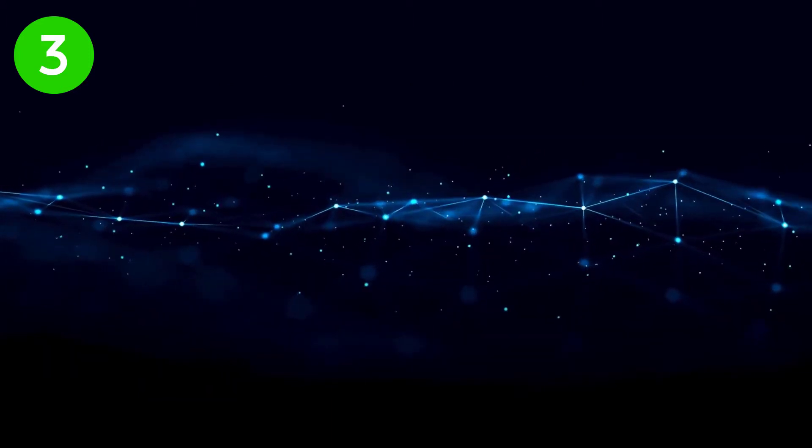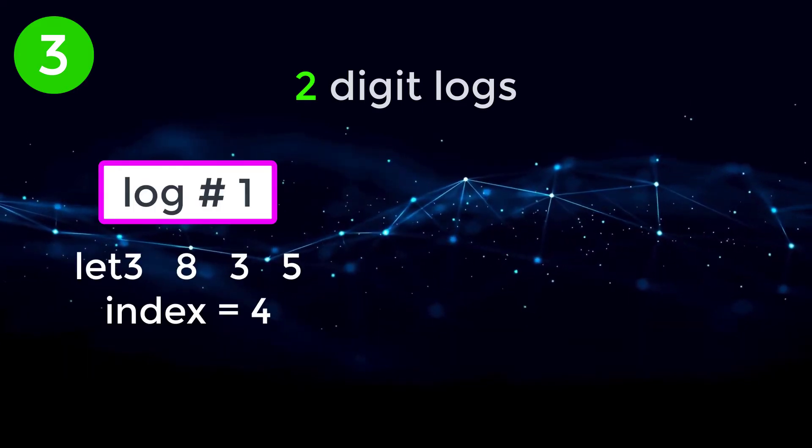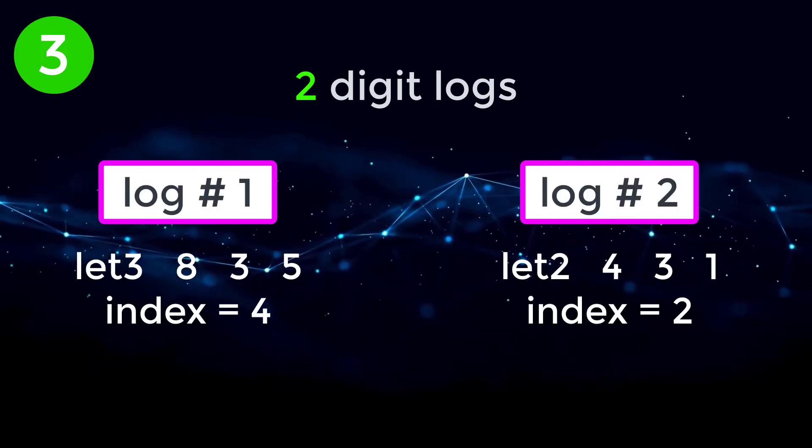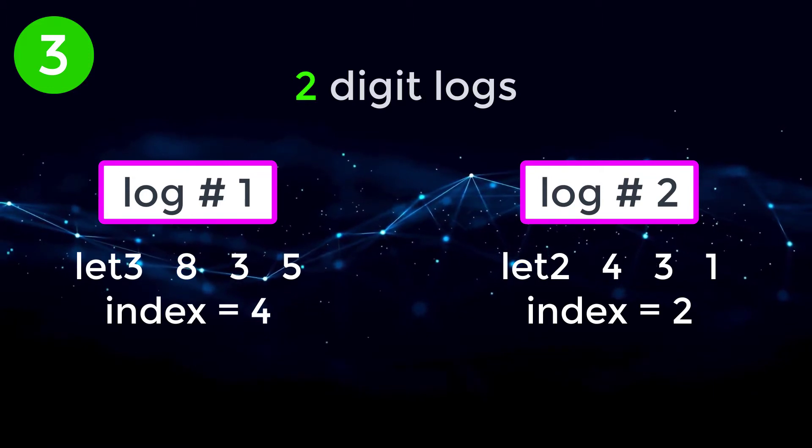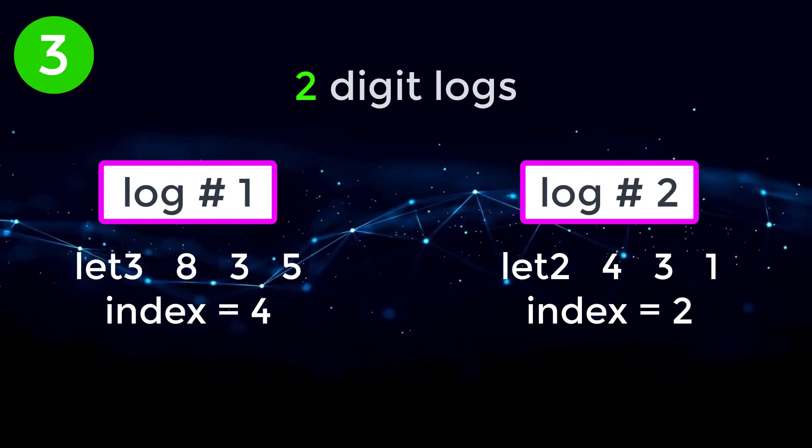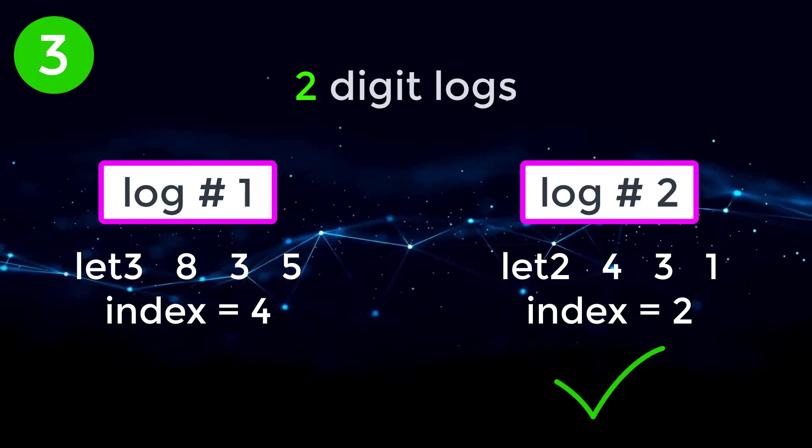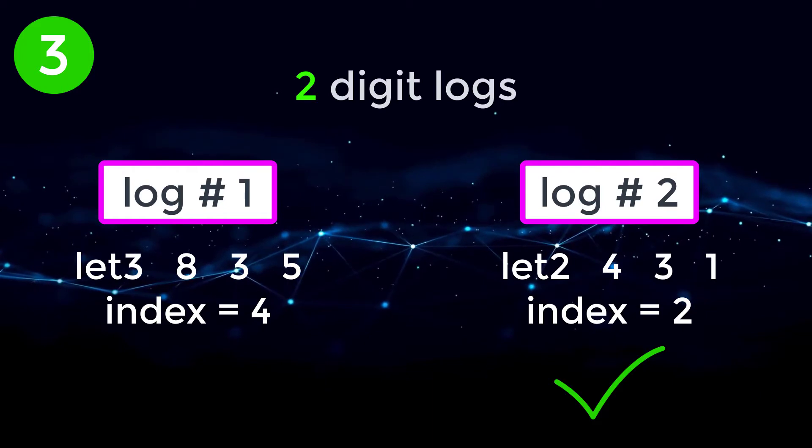And then the last and final case is we have two digit logs. So let's say we have log one and log two. But in this scenario, log one is at index four in our array. Log two is at index two in our array. In this example, log two would come before log one, since it has a smaller index than log one.